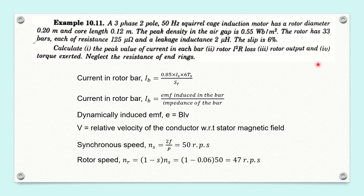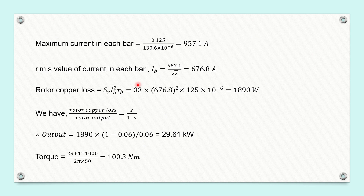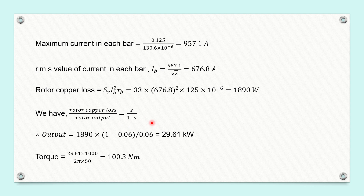Next, we have to calculate the rotor output. We use the relation: rotor copper loss ÷ rotor output = S ÷ (1 − S). From this, rotor output = rotor copper loss × (1 − S) ÷ S = 1890 × (1 − 0.06) ÷ 0.06 = 29.61 kilowatt.